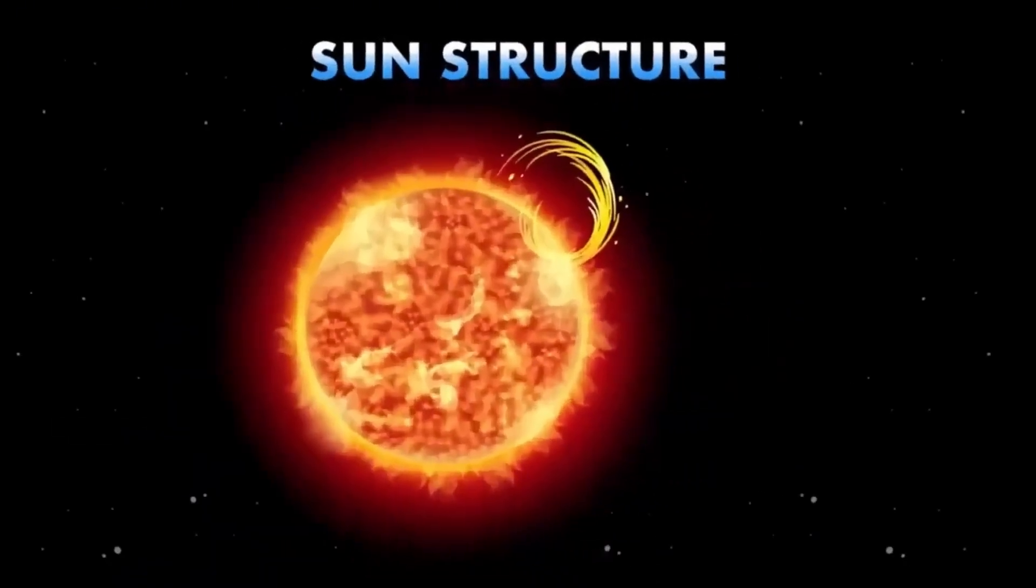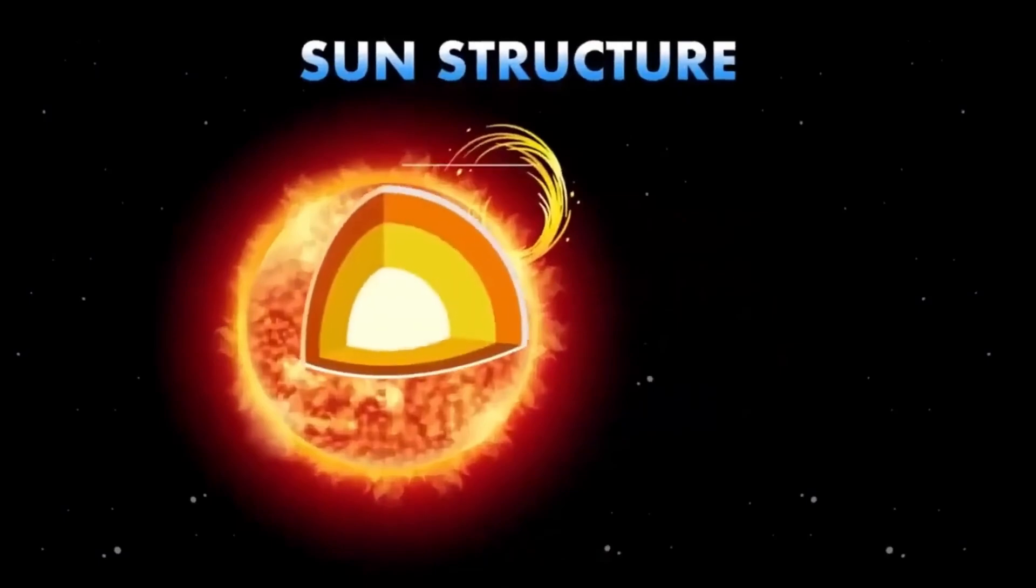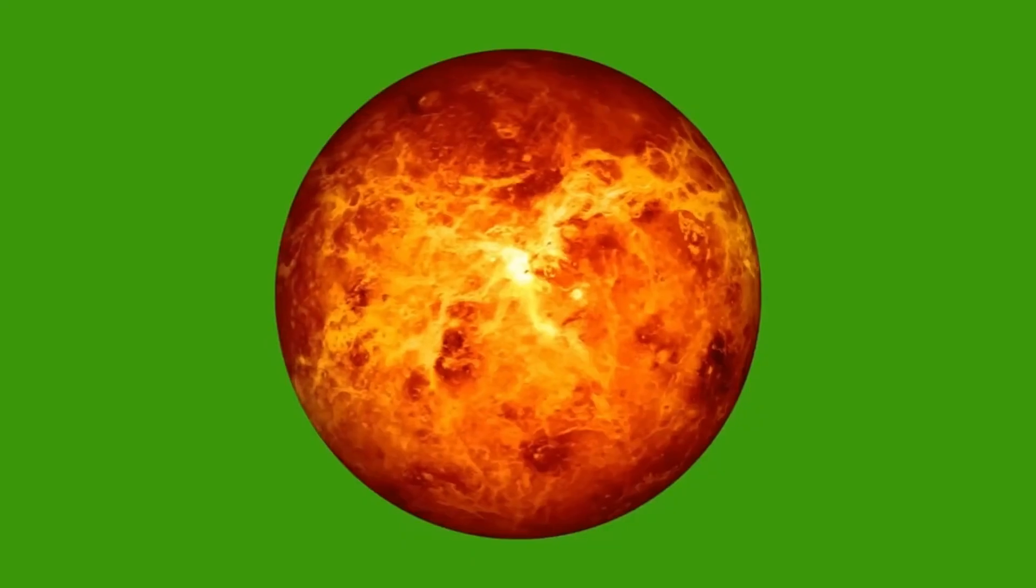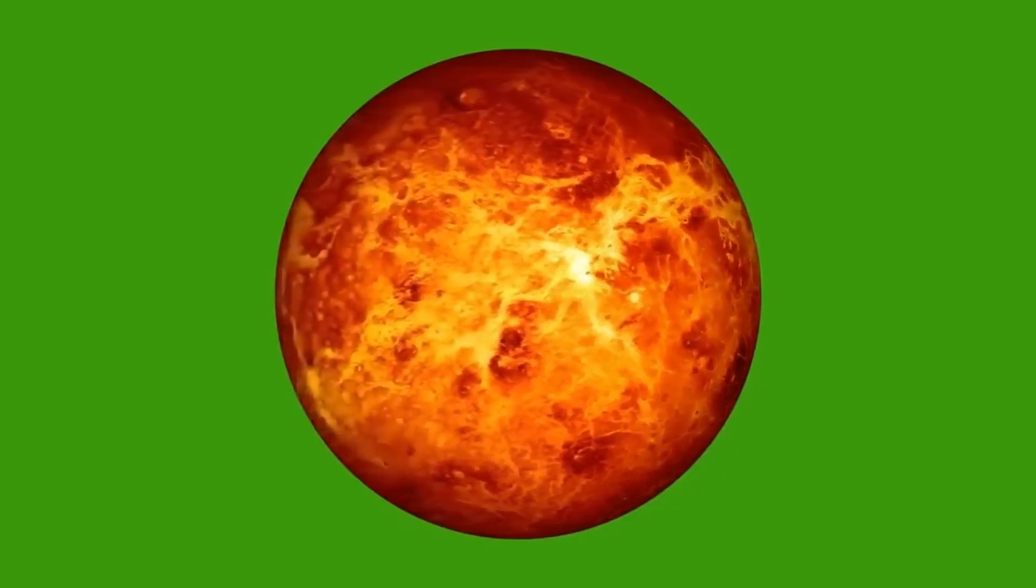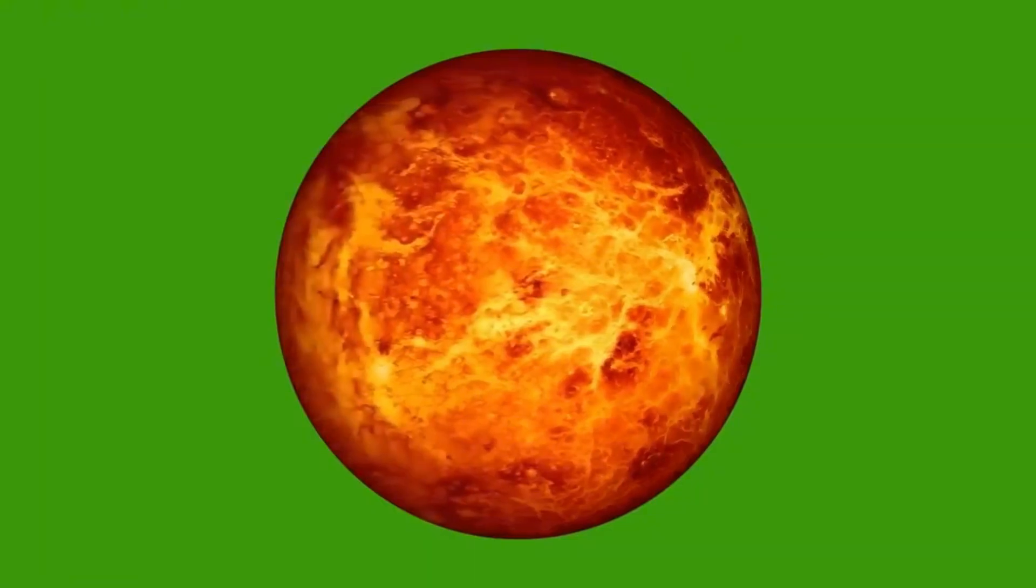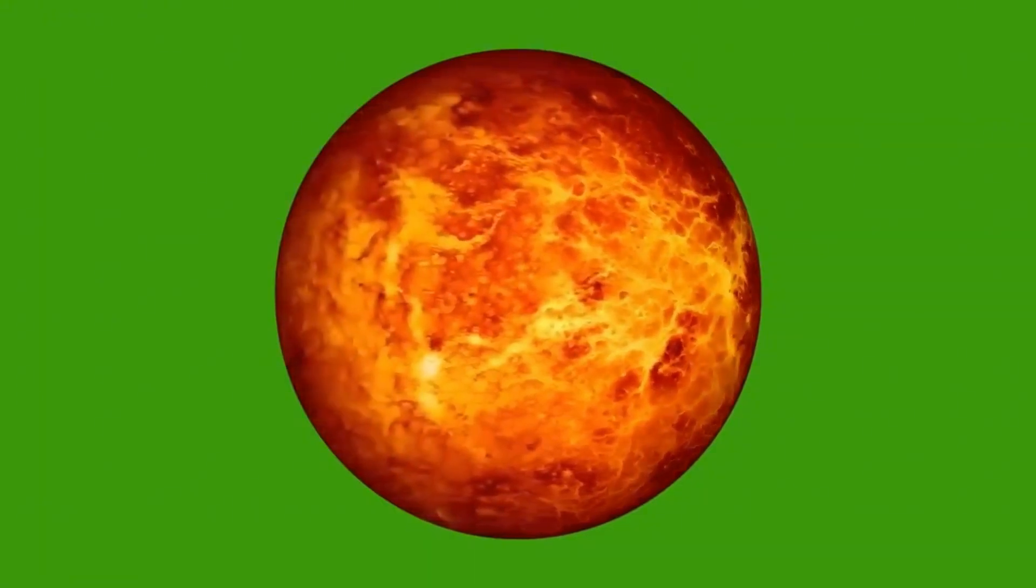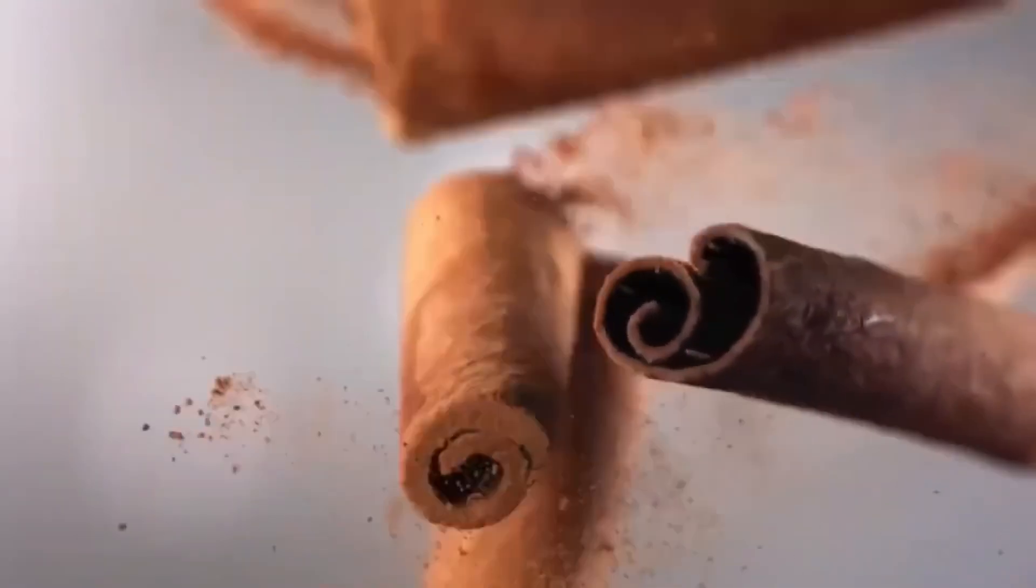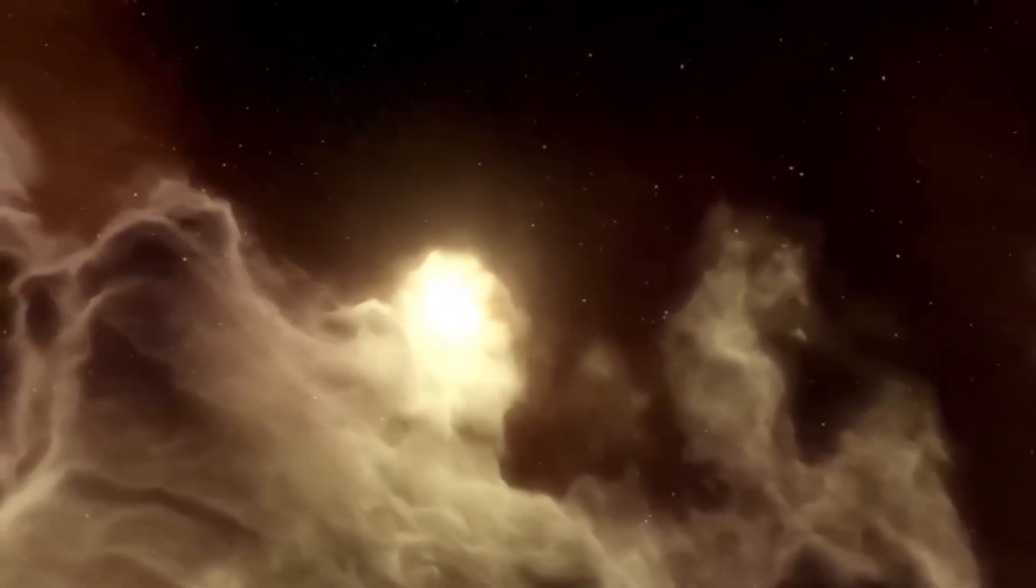Betelgeuse, nearing the end of its life cycle as a red supergiant, exhibits these convective pulsating behaviors more intensely. As the star depletes its nuclear fuel, it will eventually undergo a supernova explosion, marking the end of its life. Until then, the pulsations caused by stellar convection continue to influence its luminosity, offering astronomers valuable insights into the internal dynamics of massive stars.